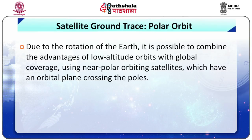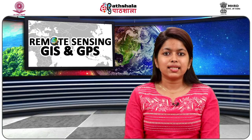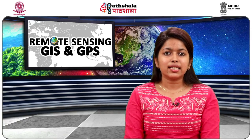Due to rotation of the earth, it is possible to combine the advantages of the low altitude orbit with global coverage using polar orbiting satellites, which have orbital planes crossing the poles, as shown in figure 6. These satellites, termed polar orbiting environmental satellites, are launched into orbit at high inclination to earth's rotation such that they pass across high altitudes near the poles. Most polar orbiting satellites are circular to slightly elliptical at distances ranging from 700 to 1700 km from the geoid, and they travel at different speeds.